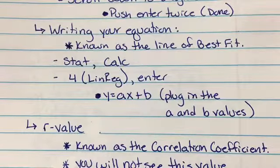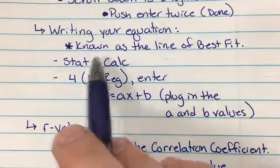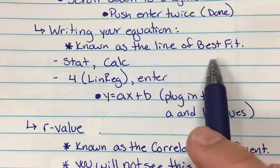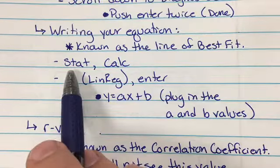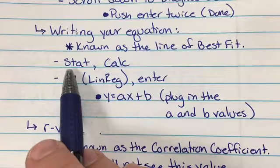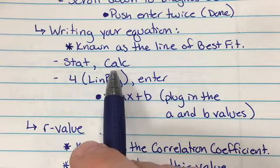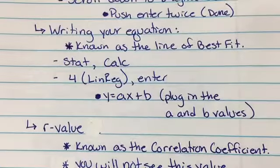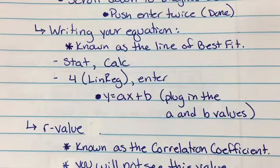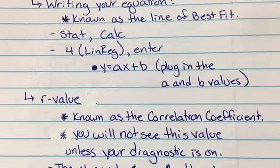As far as writing an equation, this is known as the line of best fit. When you push the stat button again after you've entered your data, you go right to the calc and you're going to go ahead and push the four button and enter and plug in the values for a and b.